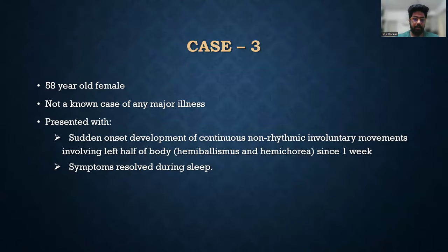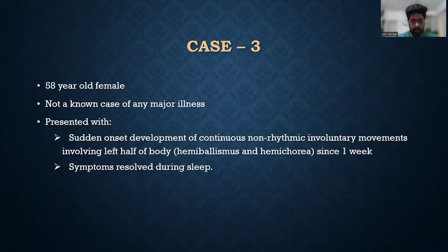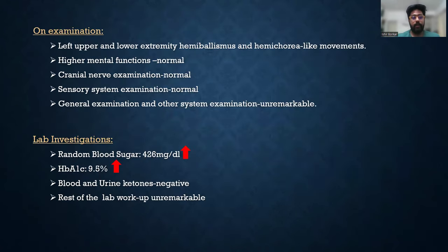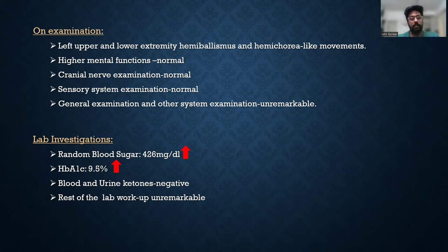The third case is a 58-year-old female who was not a known case of any major illness, who presented with sudden onset continuous non-rhythmic involuntary movements involving the left half of body, i.e., hemiballismus and hemichorea, since one week. The symptoms resolved during sleep. On examination, left upper and lower extremity hemiballismus and hemichorea-like movements were seen; higher mental functions, cranial nerve examination, sensory system, and general examination were normal. Lab investigations showed raised RBS and HbA1c; blood and urine ketones were negative, and rest of the lab work was unremarkable.